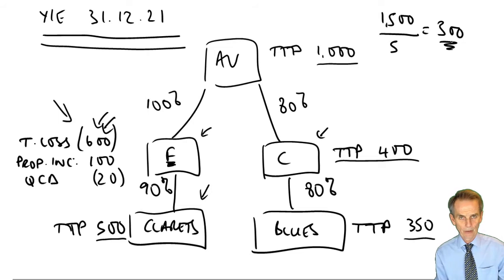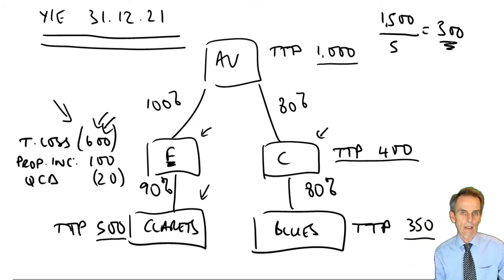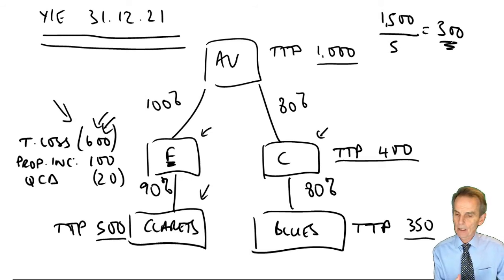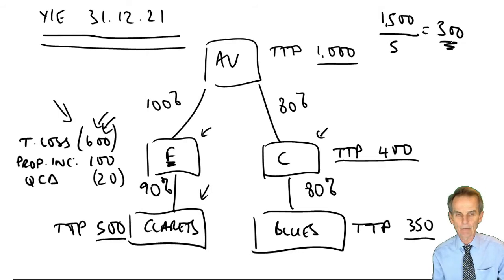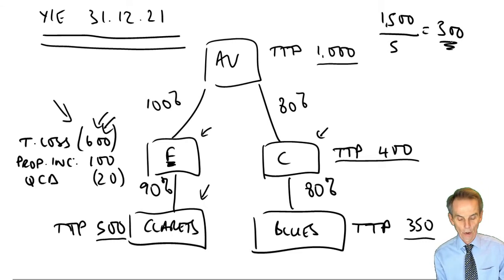How do we know whether quarterly instalment payments would be required? That is down to looking at your profit limit. The basic profit limit for a single company with a 12-month accounting period would be £1.5 million. But as we're dealing with a group of companies, we must divide that profit limit by the number of related 51% group companies — that is five — giving us a £300,000 profit limit.